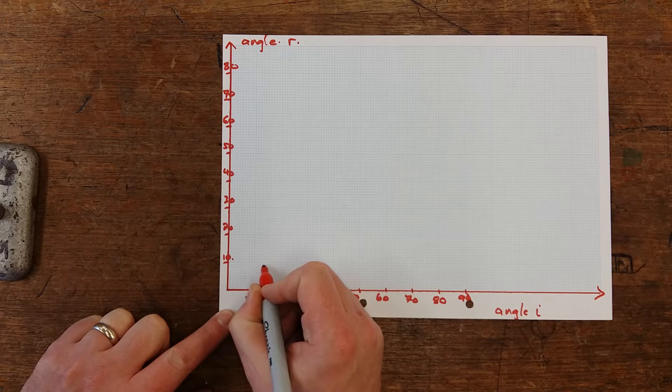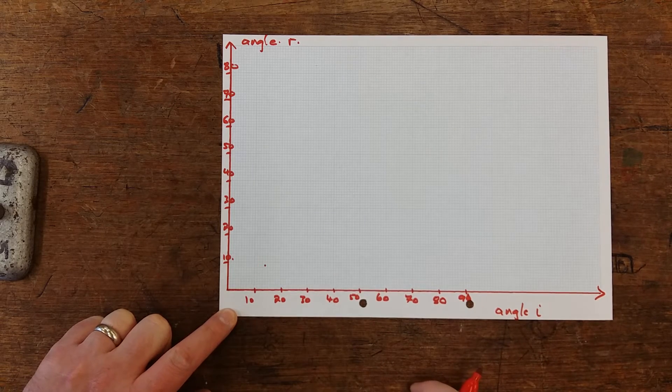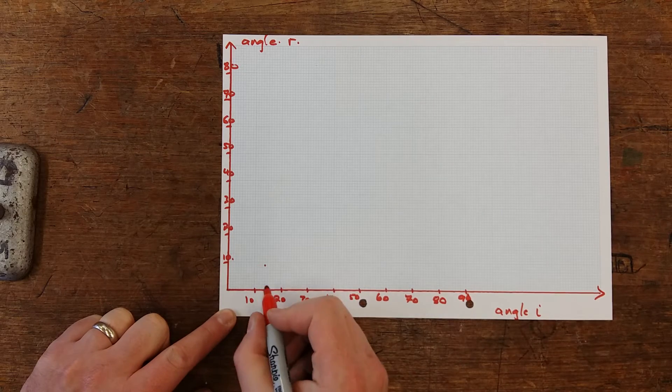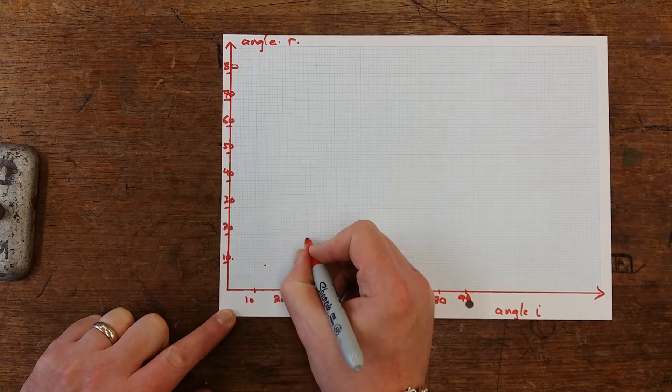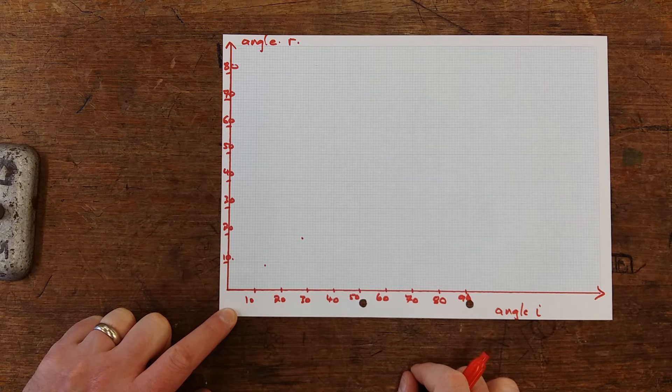Second result we've got there is 28 and 19. So you go along to 28, you go up to 19, and you do this for all of your points just to make sure that your graph is nice and clear.